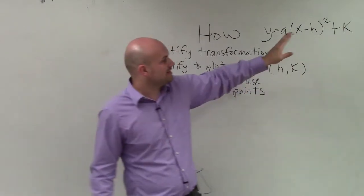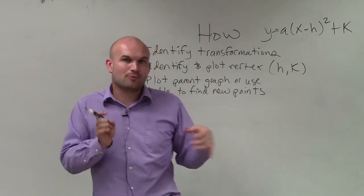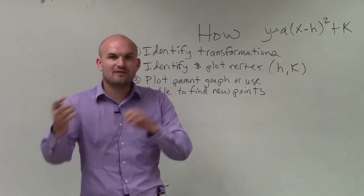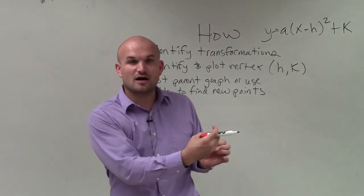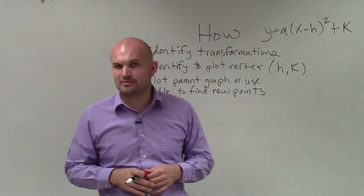Then you plug in the x values that you chose and determine what the y value is, then plot those two points. It's important if you only pick two points that are to one side of the axis of symmetry, you can reflect them over on the other side of the axis of symmetry, so you are able to graph the shape of the parabola.